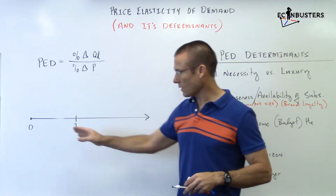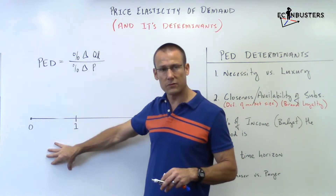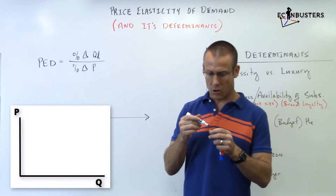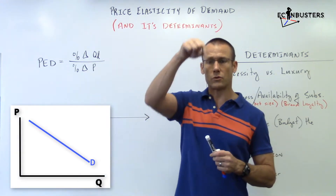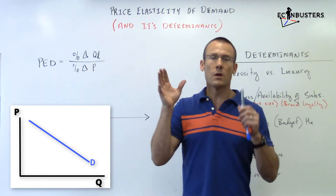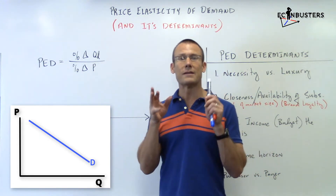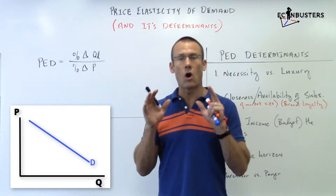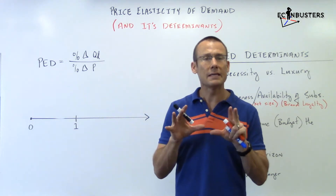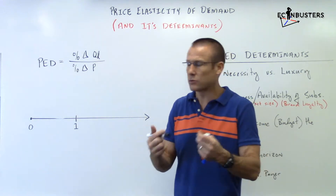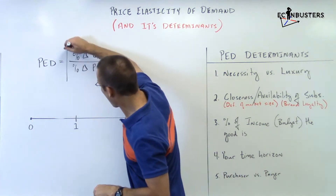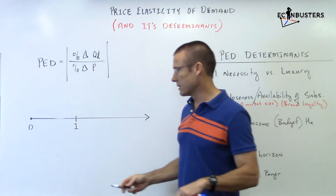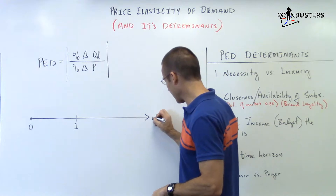PED is truly a negative number because of the law of demand — price goes up, QD goes down; price goes down, QD goes up. We have a negative relationship. But because it is a law of demand and it's always going to happen, economists say PED values should always be expressed in absolute value terms. So we're always going to be in positive territory.